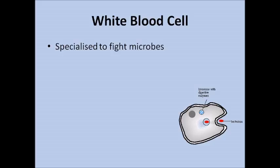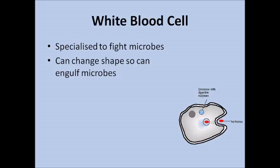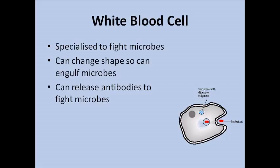White blood cells are specialised to fight microbes such as bacteria and viruses. Their cytoplasm can flow, which means the white blood cell can actually change shape and wrap around a bacterium or virus — we say it engulfs the microbe. Never say that the white blood cell eats the microbe; it's engulfing. White blood cells can also release things called antibodies to fight microbes. Antibodies attach to proteins on the surface of the microbe, making them clump together, and then another white blood cell can come and engulf lots of those microbes that are all stuck together.